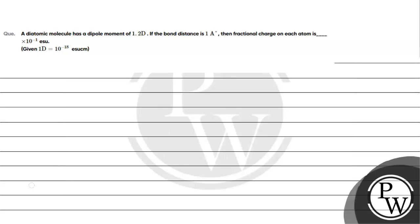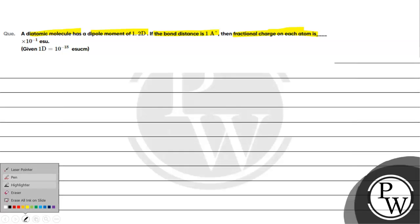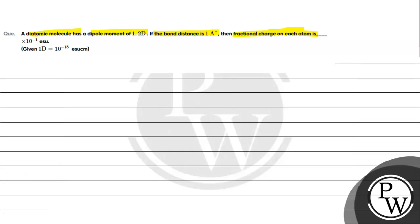Let's read this question. A diatomic molecule has a dipole moment of 1.2 D. The bond distance is 1 angstrom. We need to find the fractional charge on each atom — how much fractional charge will be on one atom.